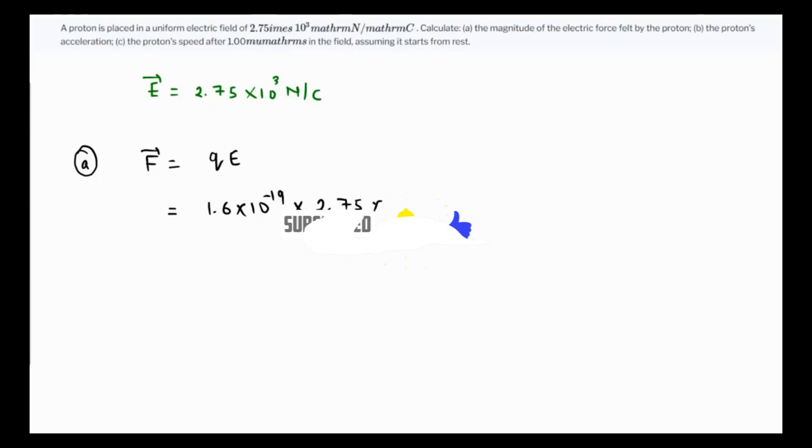So let me just grab my calculator. This is 1.6 times 2.75, which is 4.4. So it's 4.4 times 10 raised to minus 16 Newtons. This is the force or the magnitude of the force.